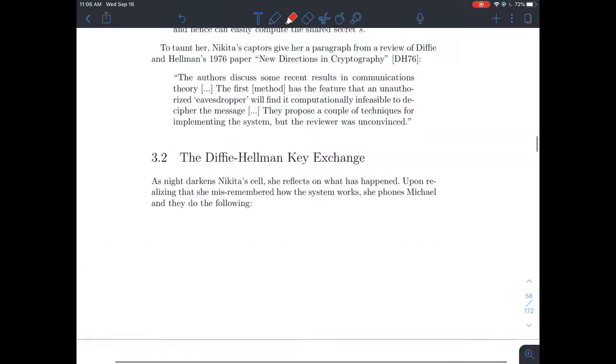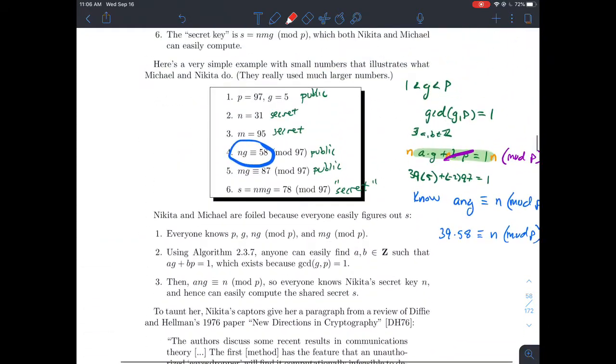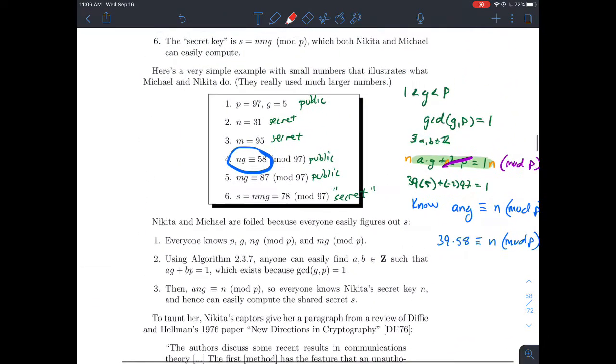In the previous video, we looked at a key exchange where you have a prime, so there's Nikita and Michael, and they want to send a message back and forth to each other. Their idea was they'd pick a prime P and some number G that's less than that prime. Both of these things are things that everybody knows. In other words, anybody that's trying to eavesdrop on their conversation also has access to that knowledge.